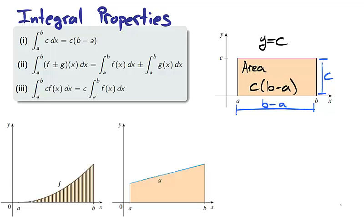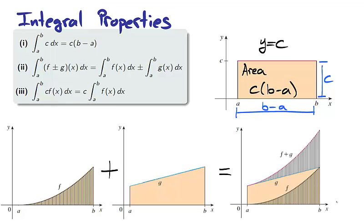For the second property, we take two functions, f and g, and add them together to get a function f plus g. Area is additive, a fact we've used often in this course. The area of the sum f plus g is the sum of the areas of f and g. Notice that the sum of f plus g has the shaded region of f sitting atop the region of g. This holds in the case of subtraction as well.